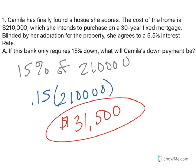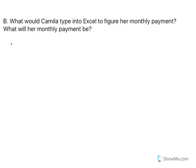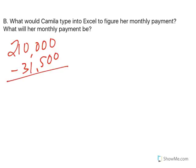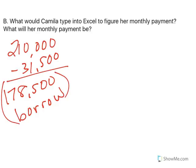So Camilla's going to withdraw $31,500 from her savings account and pay that on the house. Before we even read the next part: if the house is $210,000 and she's putting $31,500 down, that means she needs to borrow $178,500. In part B, what would Camilla type into Excel to figure out her monthly payment? We're trying to find her monthly payment, so that would be PMT.